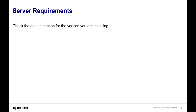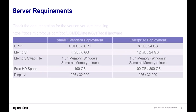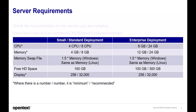The server requirements for Dataflow Probes: check the documentation for the version you are installing. That documentation also uses the keyword 'latest' to redirect the user to the latest version of UCMDB currently available. The small and standard deployments are identical. The CPU, memory, and display all have two numbers — for example, a small or standard deployment requires four or eight CPUs. The first number is the minimum; the last number is recommended. Note that you may need more resources than the recommended value depending on the workflow of the Dataflow Probe.